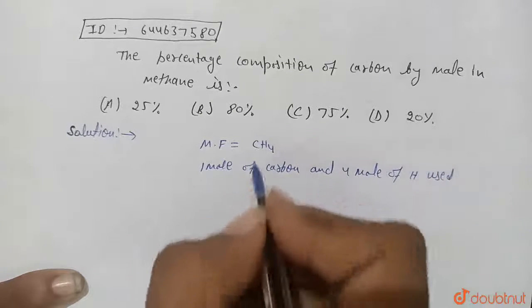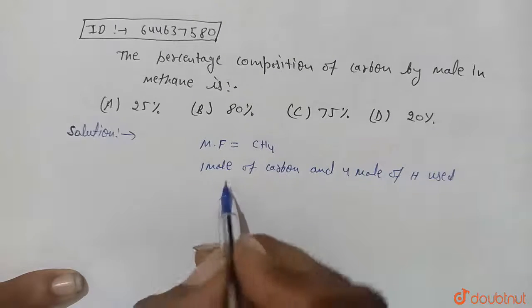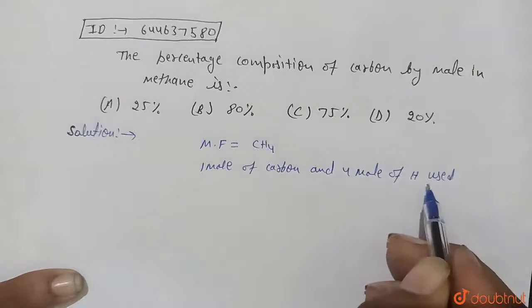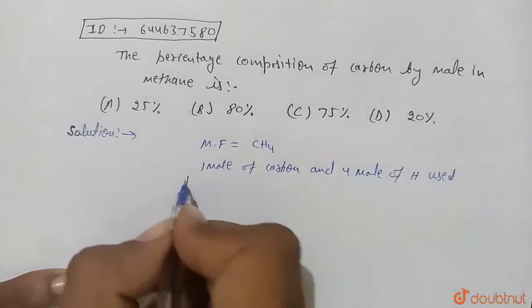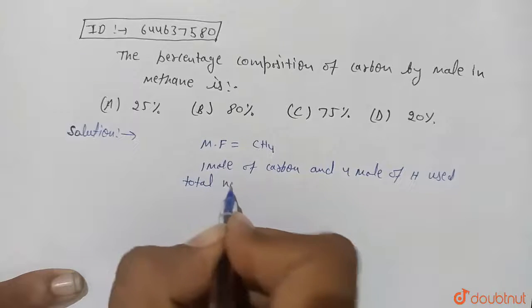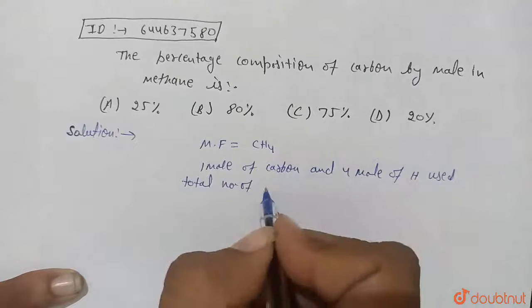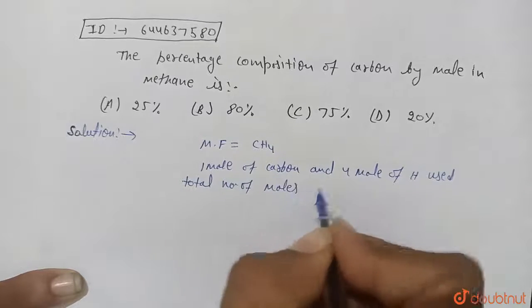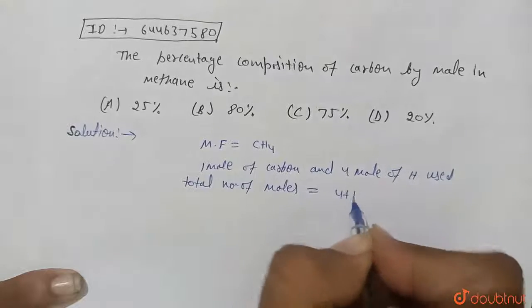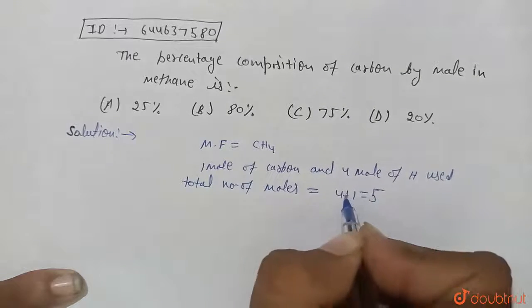One mole of carbon and four mole of hydrogen are used. Then total number of moles will be four plus one equal to five moles. Now we find the percentage composition by mole of carbon.